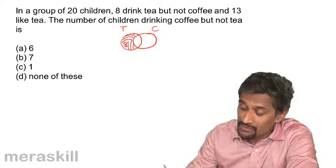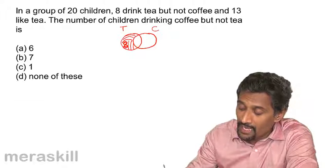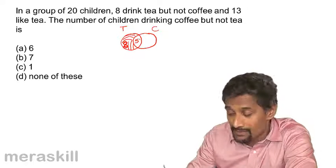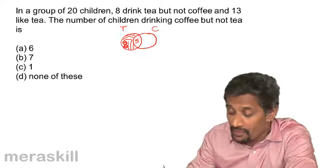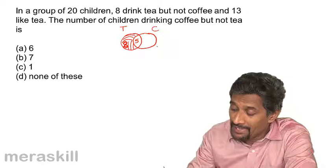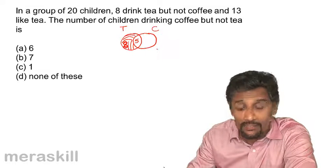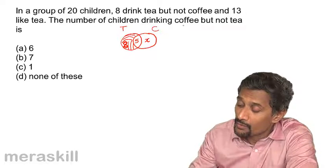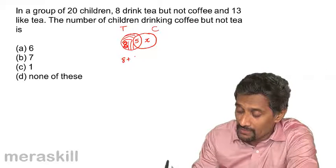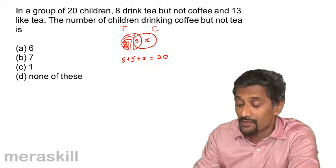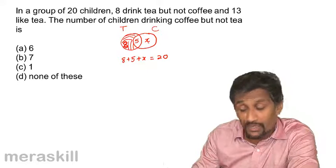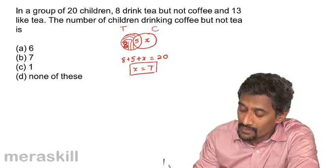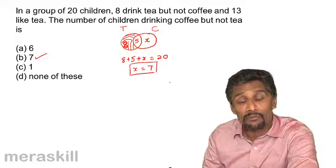13 like tea, which means this whole tea circle is 13. So 8 like only tea but not coffee, and 13 minus 8 means 5 like both tea and coffee. Eight like only tea. And since there are totally 20 children, 8 plus 5 plus X equals 20. So X equals 7. There are 7 people who drink coffee but not tea.